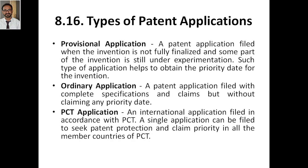The provisional application helps you obtain the priority date for the invention. Make sure that within one year you file, or the provisional application will be rejected automatically. Next is the ordinary application — a patent application filed with a complete specification. Another word for the ordinary application is the complete application.